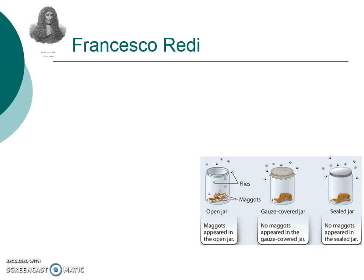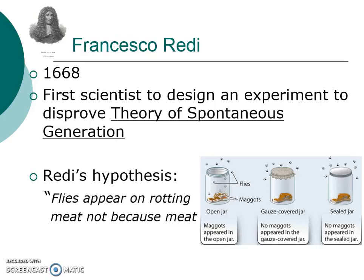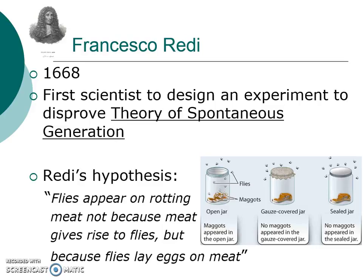Then came along a guy by the name of Francesco Redi. In 1668, he was the first scientist to design an experiment to actually disprove the theory of spontaneous generation — that living things come from non-living things. His hypothesis was that flies appear on rotting meat not because meat gives rise to flies, but because flies actually lay eggs on the meat. When flies are open and they can get into the jar, they lay eggs on the meat, which produces maggots and new flies. But when you cover that jar, nothing appears. So things can't just come from nothing — that was his idea.